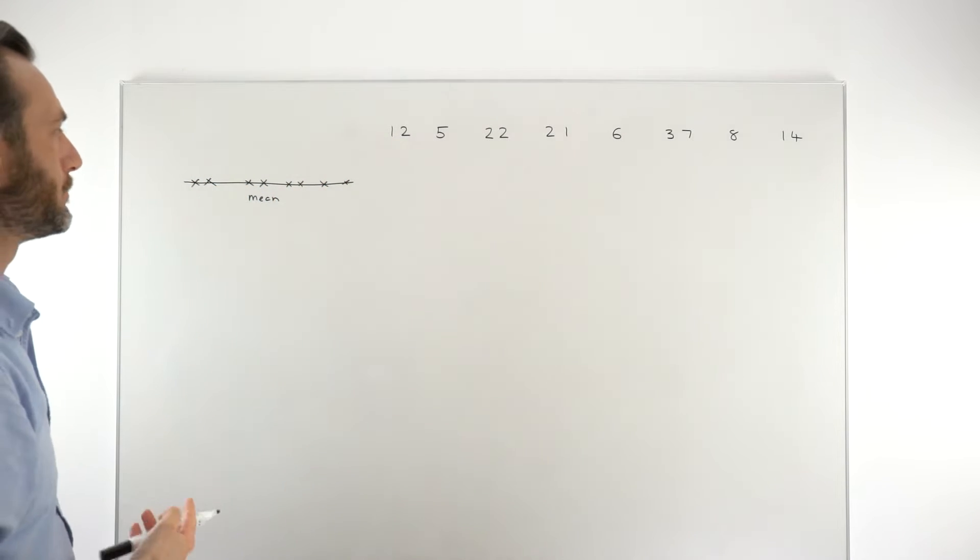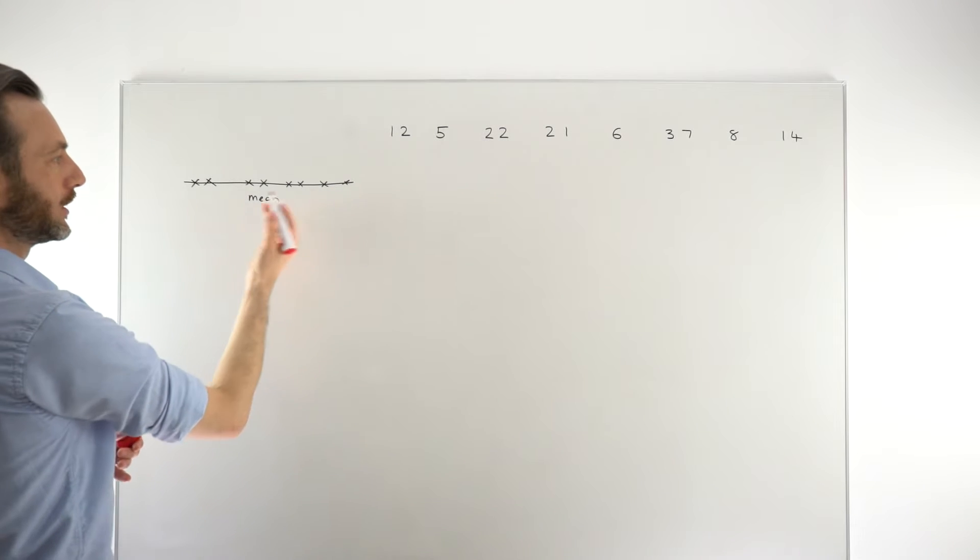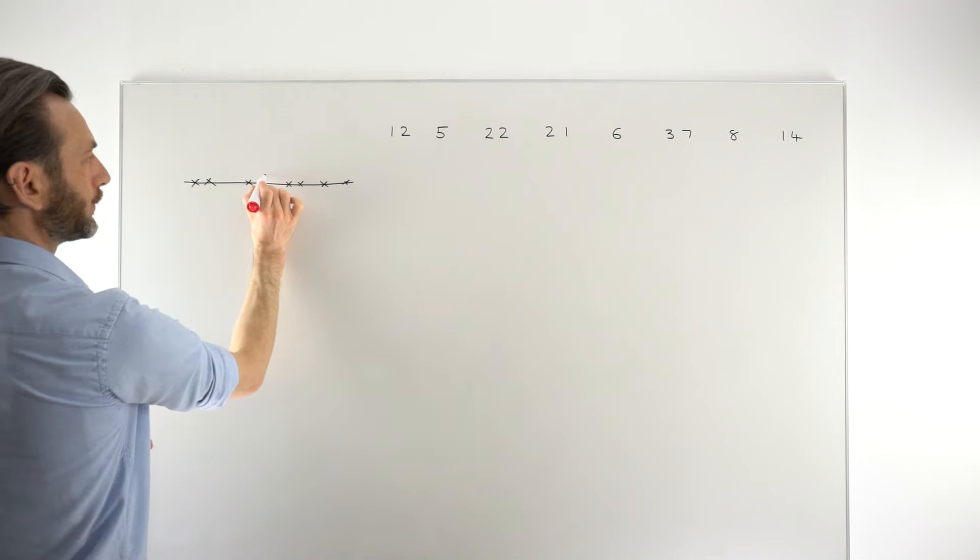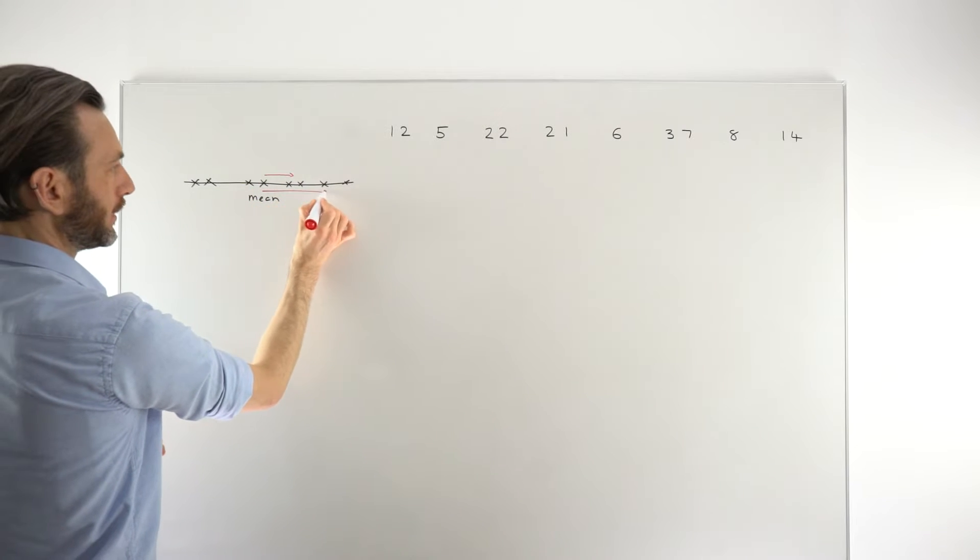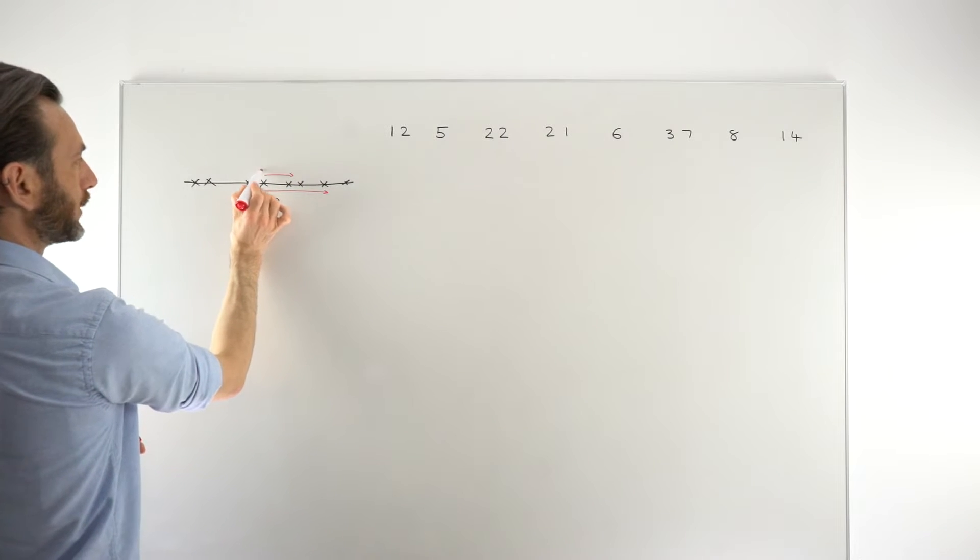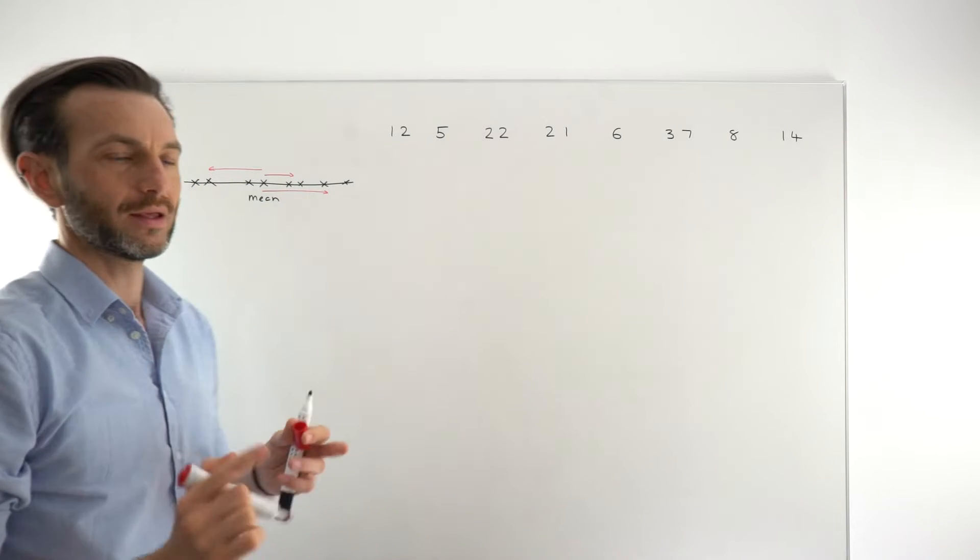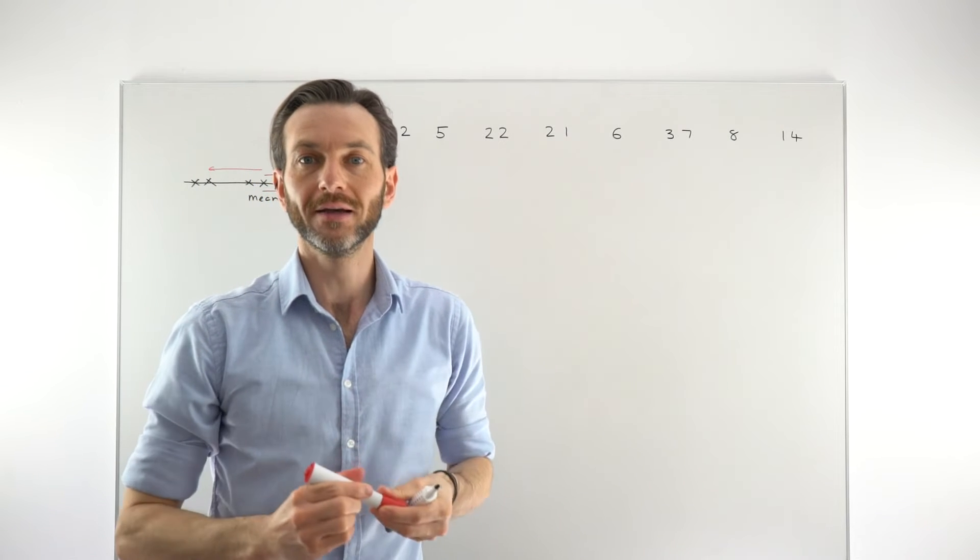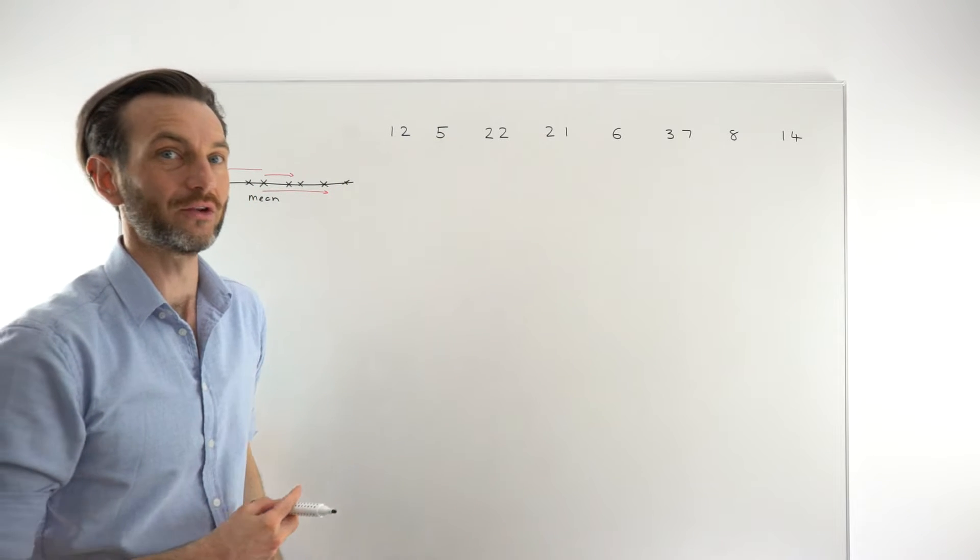What we want to do is to measure how far on average each of these points is from the mean. So if that point there is that far from the mean, but this point down here is that far, and then this point over here is that far, we want to kind of measure each of those gaps in the numbers, basically, and then average those gaps. And that's what we call effectively the standard deviation.